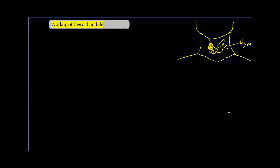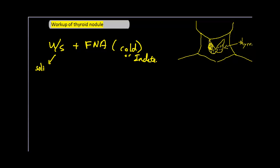The last step, as previously mentioned, is an ultrasound with fine needle aspiration. Let's say our patient had a low TSH and scintigraphy was done, but the nodule was actually cold. This ultrasound technique is used for patients with a cold nodule, indeterminate nodules, or those with normal or high TSH levels. Ultrasound alone cannot predict whether the nodule is cancerous, which is why we use fine needle aspiration to examine the cells. Of note, ultrasound is primarily used for solid versus cystic determination.